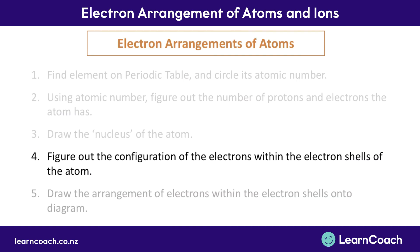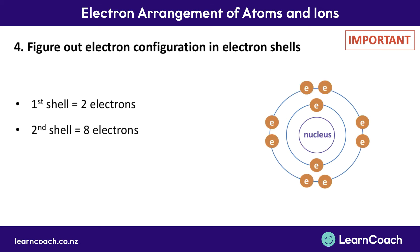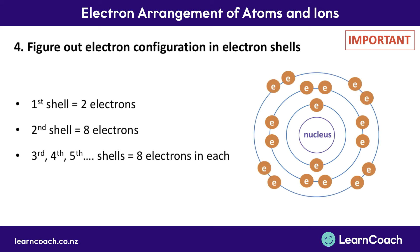We can then move on to step 4, which involves figuring out the configuration or arrangement of the electrons within the electron shells of the atom. We know that in the first shell there can only be 2 electrons — the only exception is hydrogen, which has an atomic number of 1 and therefore only 1 electron in that first shell. In the second shell there can be up to 8 electrons, and we normally draw these electrons sitting in pairs as shown here. In any of the subsequent shells — the 3rd, 4th, 5th and so on — there can also be up to 8 electrons, again drawn sitting in pairs.